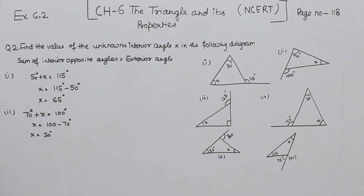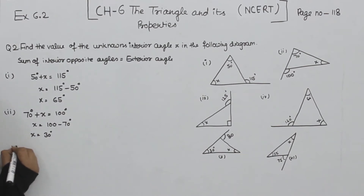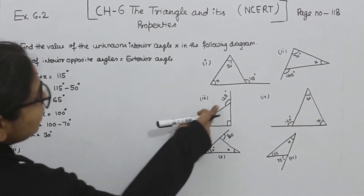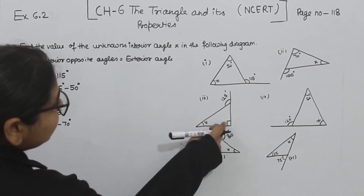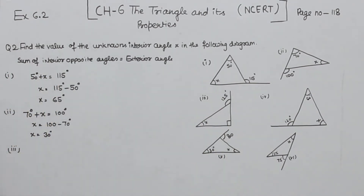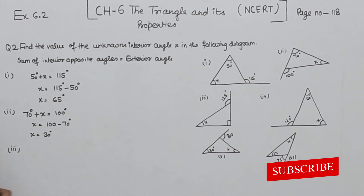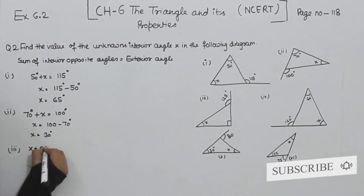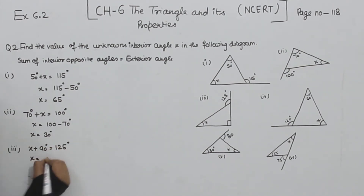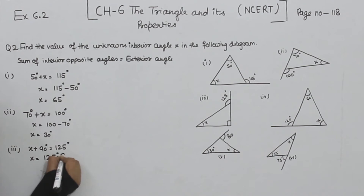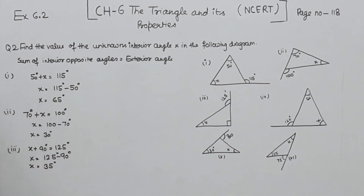Now comes part 3. In part 3, the exterior angle is 125 degrees, and the interior opposite angles are x and 90 degrees. So x plus 90 equals 125, giving x equal to 35 degrees.